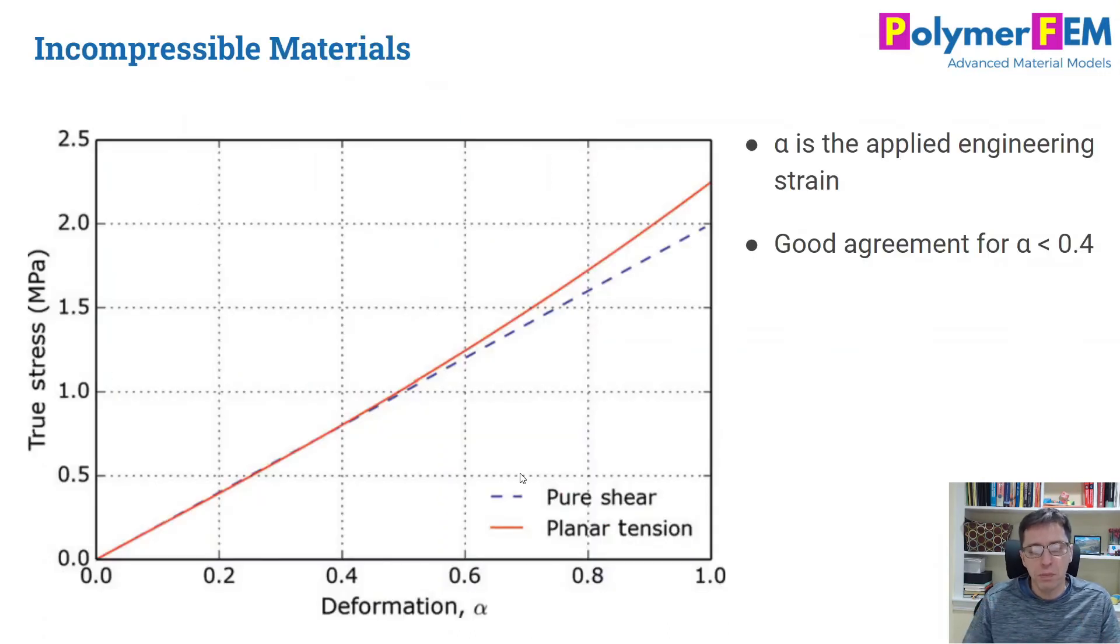So to plot this out and compare it for different deformation measures, I plotted true stress here versus deformation alpha. Alpha is like the engineering strain in the planar tension or the shear strain in the pure shear experiment. And to get the stress, I assumed the material was Neo-Hookean with a Young's modulus of one. And here's the results.